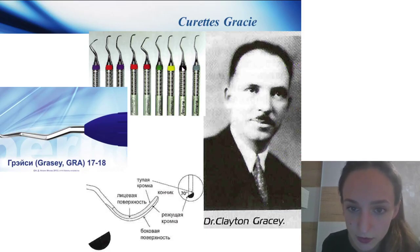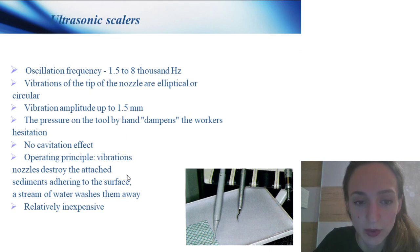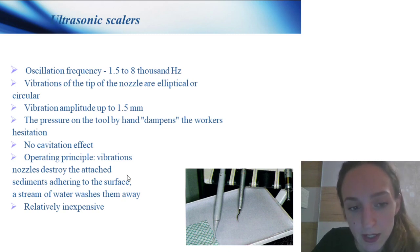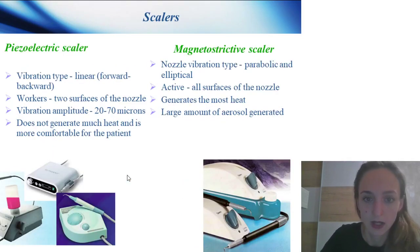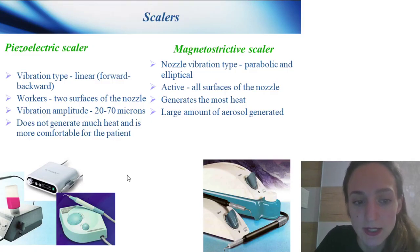Curettes — different types. Ultrasonic scalers: vibration of the tips of the nozzle is elliptical or circular; vibration amplitude up to 1.5 mm; pressure of the tool by hand dampens the hesitation, non-cavitation effect, and relatively inexpensive. Piezoelectric scalar: vibration type, works on the surface of the nozzle; vibration amplitude 20–70 microns; does not generate much heat, more comfortable for the patient.